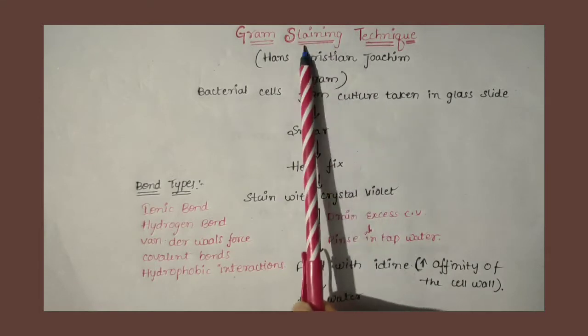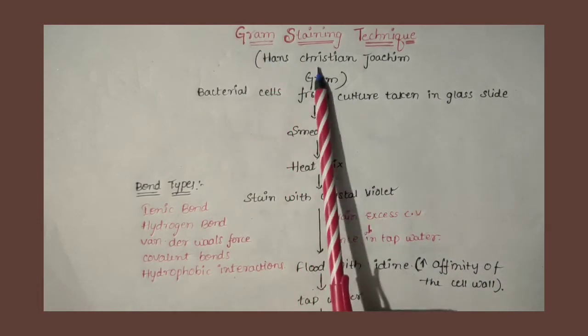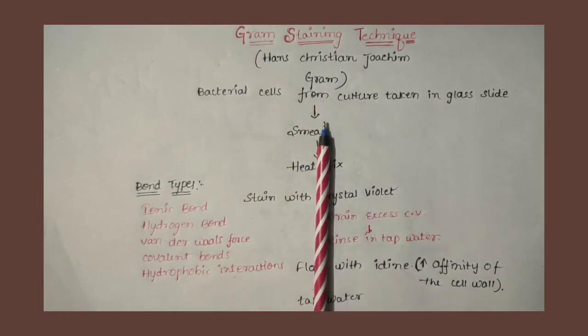So this Gram staining process is called a bacterial differentiation technique. For example, bacteria can be identified as gram positive or gram negative easily.